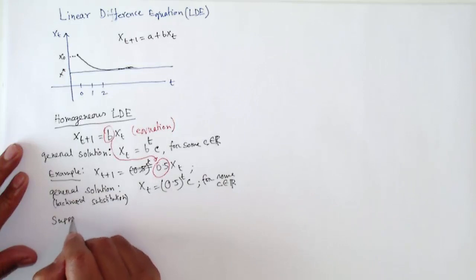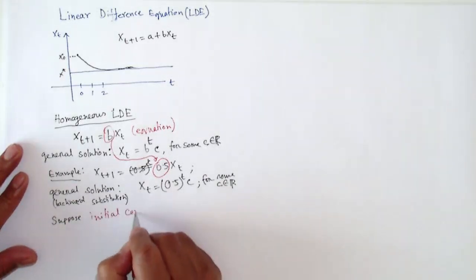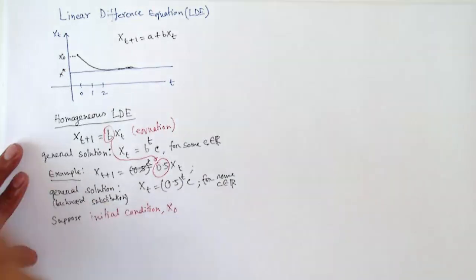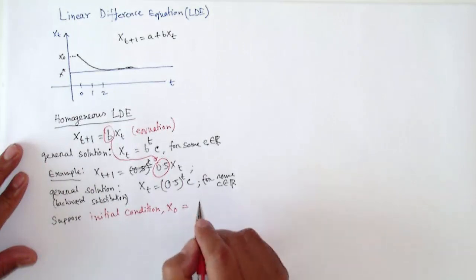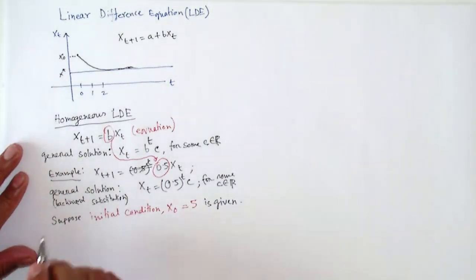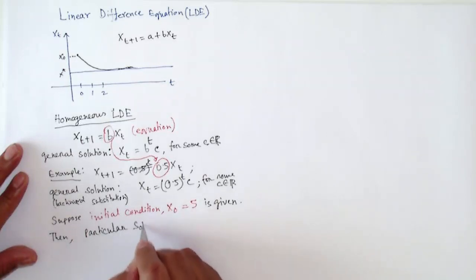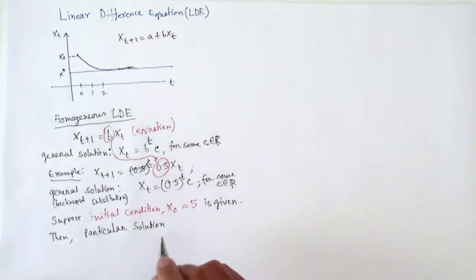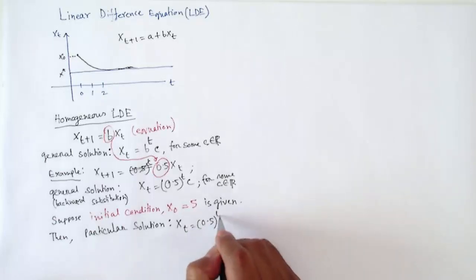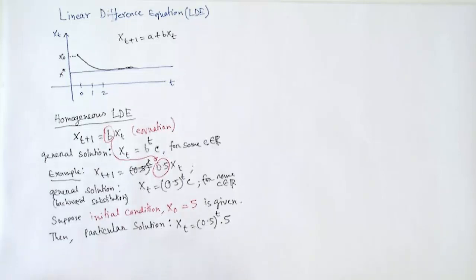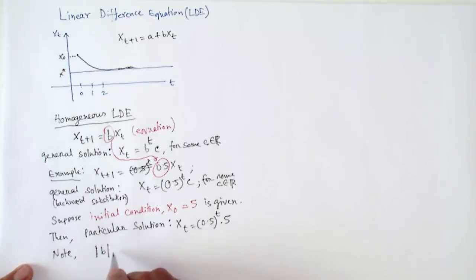Next, suppose we are given the initial condition x_0 equals 5. When an initial value is given, we can find a particular solution. Our particular solution is x_t equals 0.5^t times 5. In the particular solution, we simply replace the arbitrary constant c with the initial value, which is five.